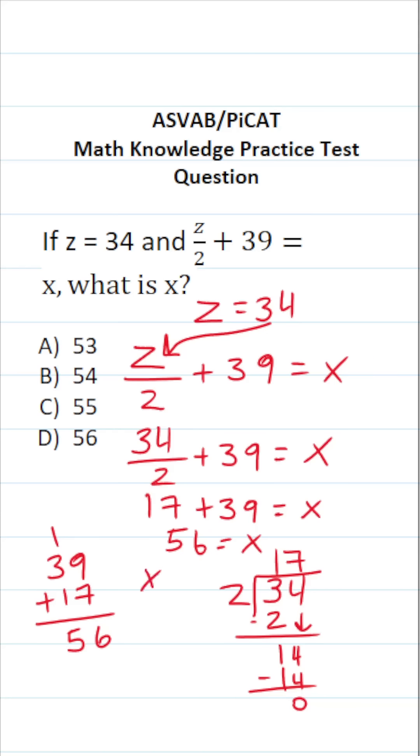Another way to write this is x equals 56. So this one is going to be D.